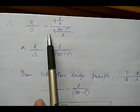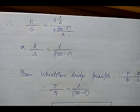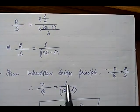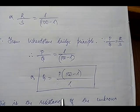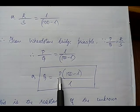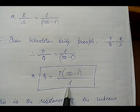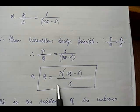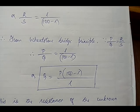Dividing R by S gives R/S = l / (100 − l). From the Wheatstone bridge principle, P/Q = R/S, so P/Q = l / (100 − l), and therefore the unknown resistance Q = P × (100 − l) / l. The value of P is known from the resistance box, and l can be measured from the meter rule fixed on the meter bridge, so we can calculate Q.